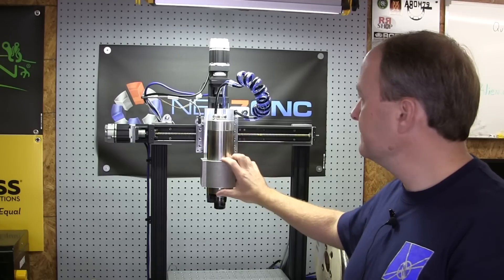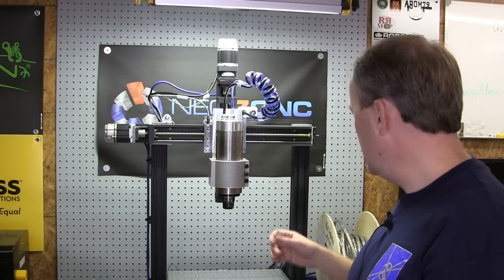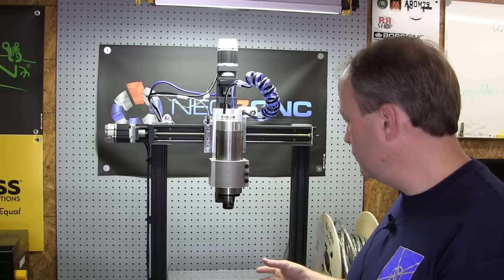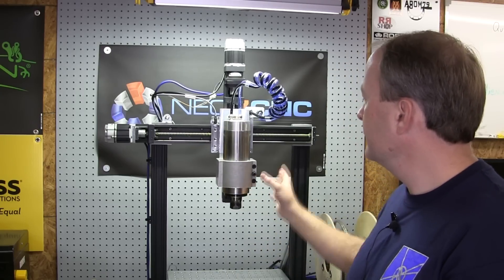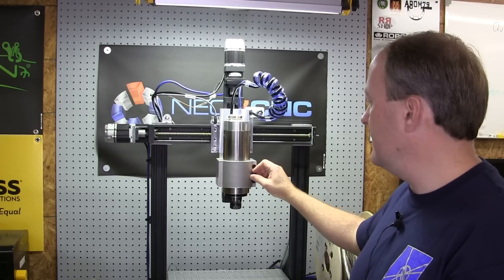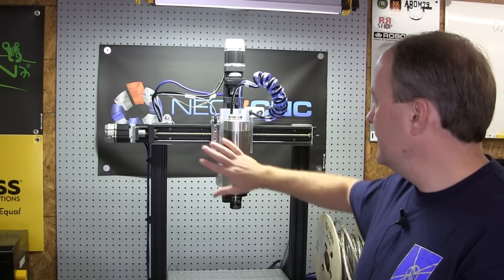In order to do that video, I had to tune the servos. So that means that this machine, by way of the Masso, I can jog it around, I can move it, I can run parts, whatever. But until we get the spindle spinning, I haven't really fussed around with any of that.